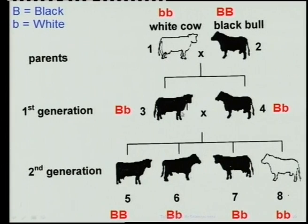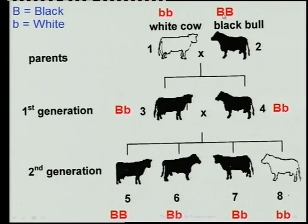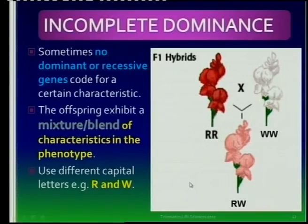If you look at the first generation, the F1, you see both of them are black. You have the black bull and cows. Why are they both black? It means black must be the dominant allele, and these must have been two homozygous organisms that were crossbred.